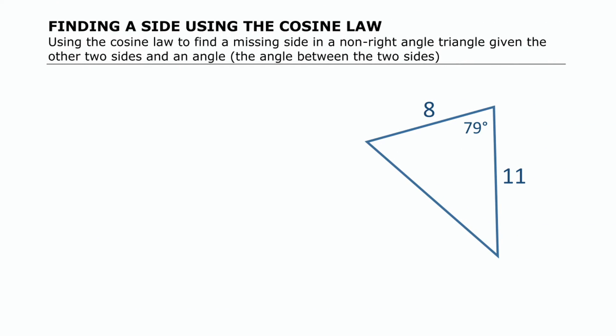So if we're going to use the cosine law here to find a missing side in this triangle, let's think about why we need to use the cosine law and not the sine law. If we were going to use the sine law we need to have an angle-side pair. The sine law involves two angle-side pairs and creating a proportion using those values. We have an angle but we don't have the side that goes with it. We have two sides but we don't have the angles that go with either one of those, so we can't use the sine law here.